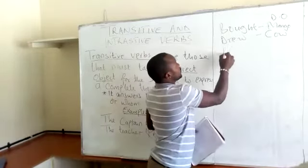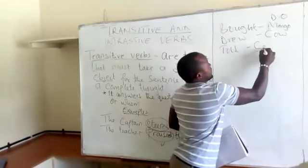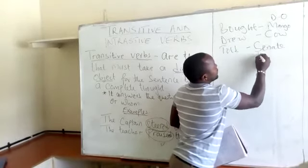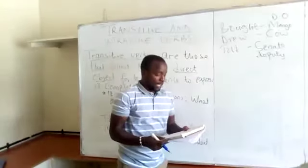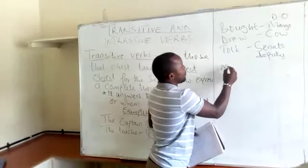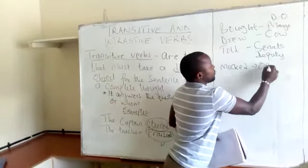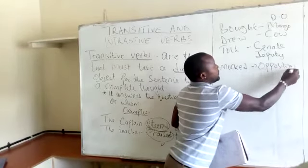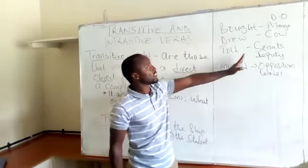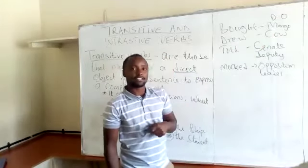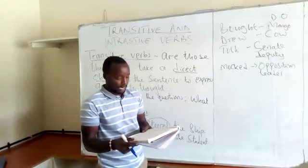The president told — 'told' is a transitive verb, but who did he tell? The senate deputy speaker. Told the deputy speaker. You can also talk about the word 'mocked' — and who is it that was mocked? Obviously, it is the opposition leader, for example. So in that case, you will note that all these actions must be followed by nouns for the sentences to make sense. If those nouns are not there, then the sense might not come out clearly.